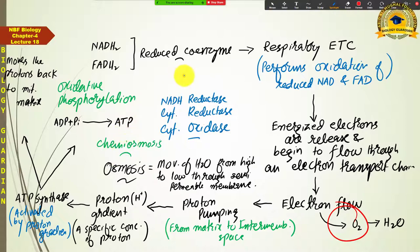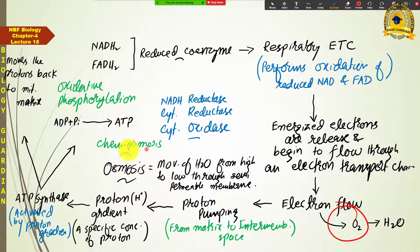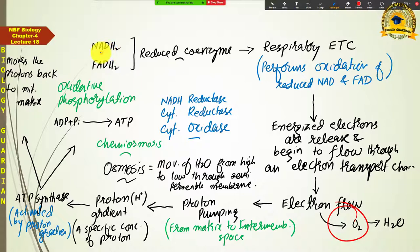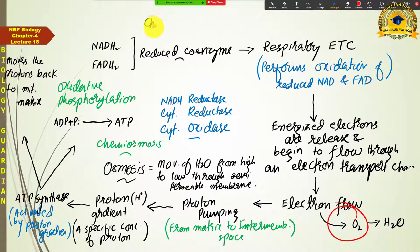Photophosphorylation occurs only in plants, but oxidative phosphorylation occurs in both plants and animals. You can use these as differentiating points. When explaining chemiosmosis, state that it is the mechanism of ATP generation during oxidative phosphorylation and photophosphorylation, in which the energized electrons of molecules such as NADH₂ and FADH₂ (in respiration) and chlorophyll (in photosynthesis) begin to flow.